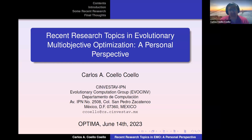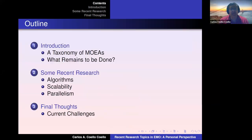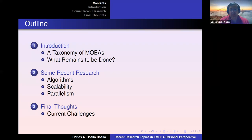This talk is organized in the following way: I will first give a short introduction to multi-objective optimization with a focus on taxonomy. I will construct the rest of the talk based on this taxonomy because I want to emphasize the evolution in the design of multi-objective evolutionary algorithms we have had since the early days in the mid-80s up to now.